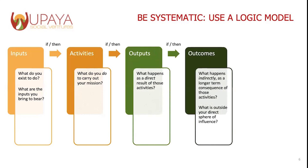With those outputs, we then think about outcomes. And this is where it starts to get interesting. This is the 'so what?' What happens as a result of those outputs? You touched 1,000 lives, great. But did those lives improve? These are really the meaty questions. And these can also happen perhaps a little bit outside your direct sphere of influence. This is what happens over a longer period of time.